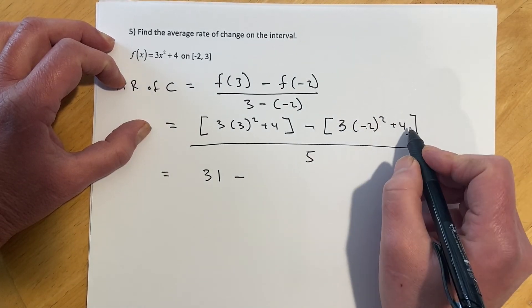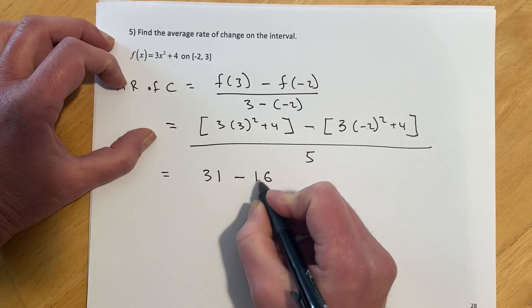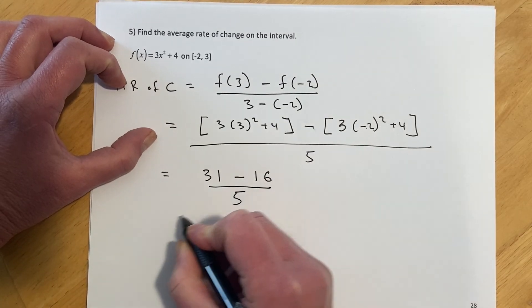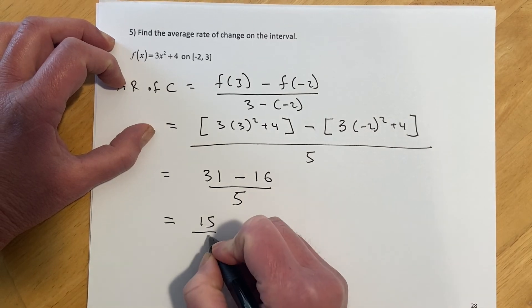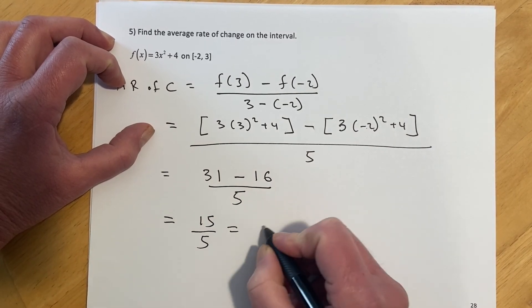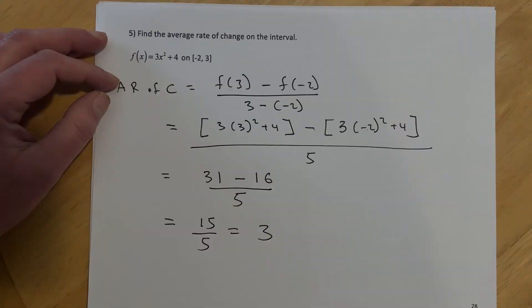and then up 4 from there, get us to 16 over 5. 31 minus 16, that is 15 over 5, or our average rate of change will be 3.